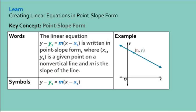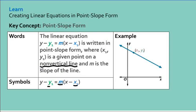Point-slope form is a linear equation where X1, Y1 is a given point on the line. Remember, it has to be a non-vertical line, because if you know it's a vertical line, you don't want the slope. M is the slope of the line. We're going to use Y minus Y1 equals M times X minus X1, where the colored letters are where you substitute numbers. The Y and the X have to stay.